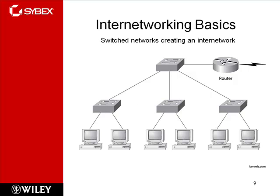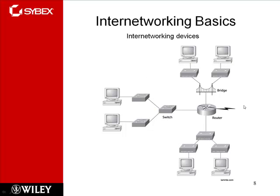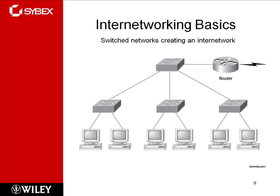Switch networks — each port on a switch has arrows in and arrows out in the Cisco symbology. The hub only had a single arrow like a bus, while the switch has four arrows on it, in and out. Routers show a circle with arrows in and arrows out. When you start looking at Cisco icons and symbols, that's what those things mean.